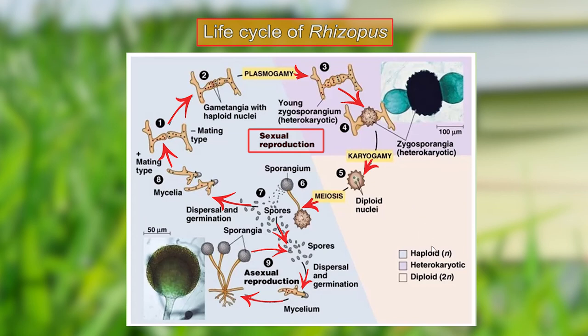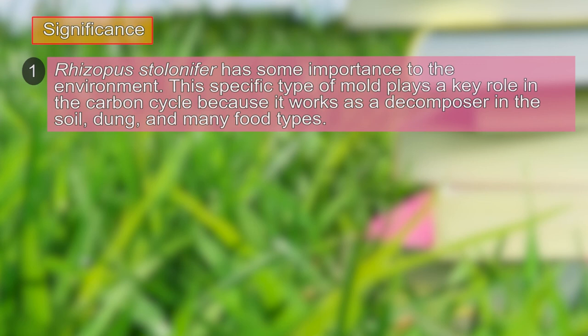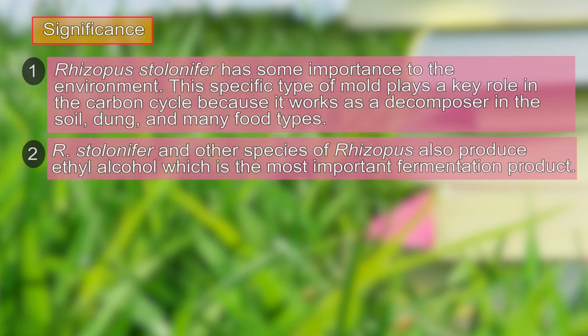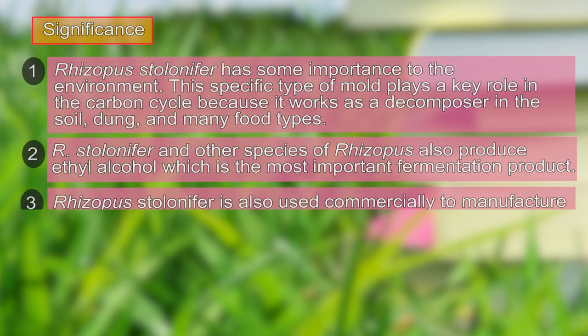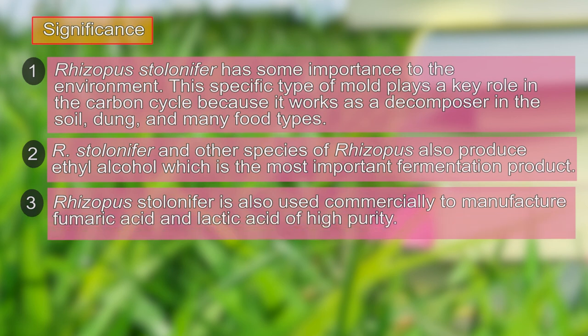Now we will study the significance of Rhizopus. Rhizopus stolonifer has importance to the environment as it plays a key role as a saprophytic microorganism, participating in the carbon cycle as a decomposer in soil. Rhizopus stolonifer and other species also produce ethyl alcohol, an important fermentative product. It is also used commercially to manufacture fumaric acid and lactic acid of high purity.